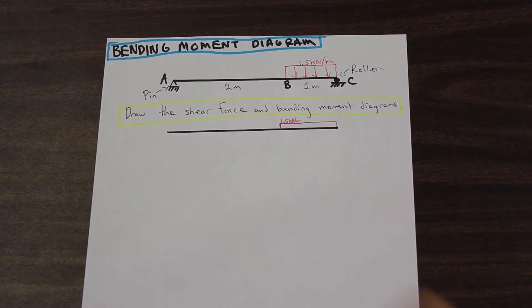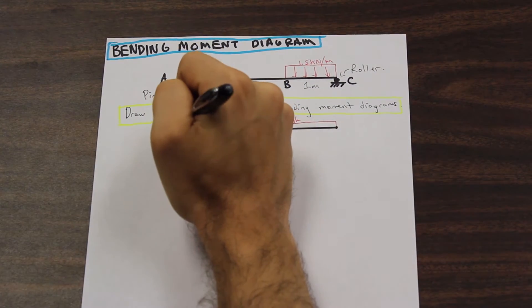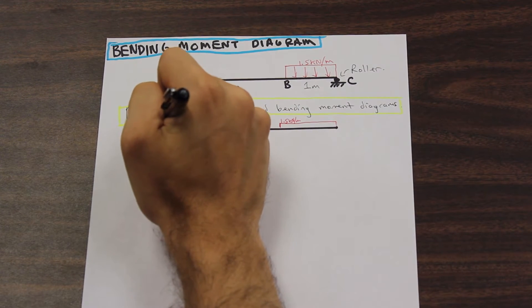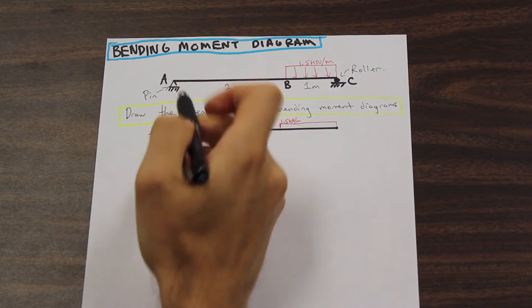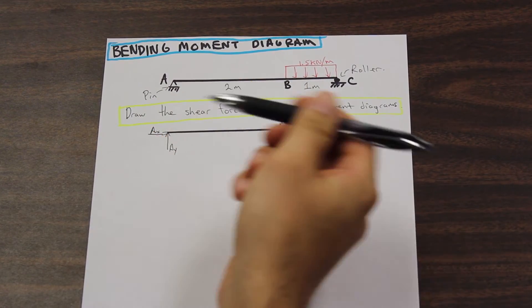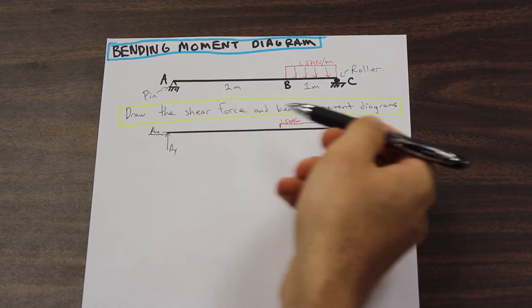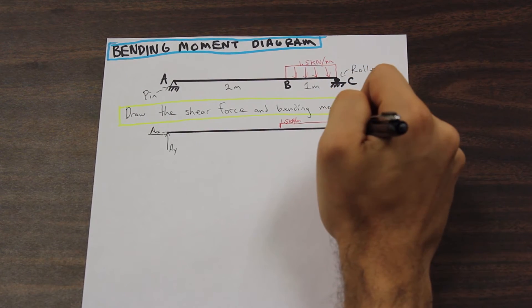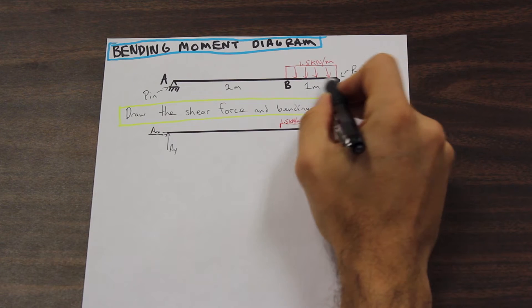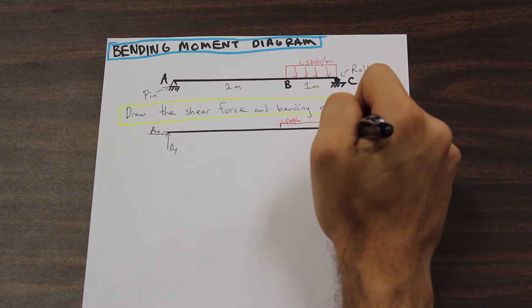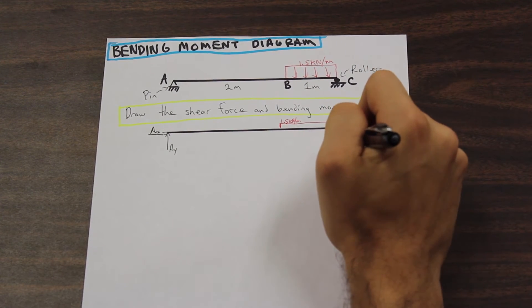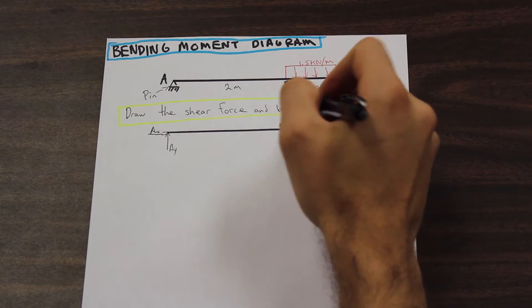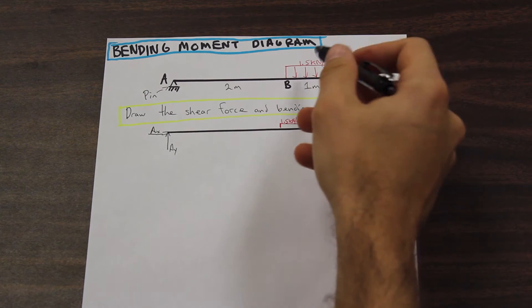So we have again 1.5 kilonewton per meter. Here we have a reactionary force here and because it's a pin, we have our AY and we also have AX, right? So the pin is resisting movement in the x-axis and the y-axis. And we have a roller at C. So C is not restricting movement in the x-axis, so there's no reaction force, but it is restricting movement in the vertical direction.